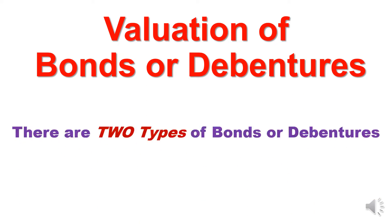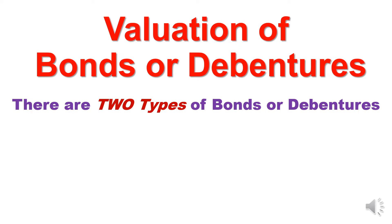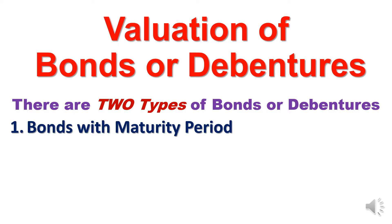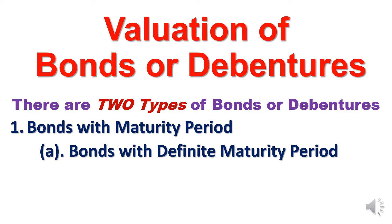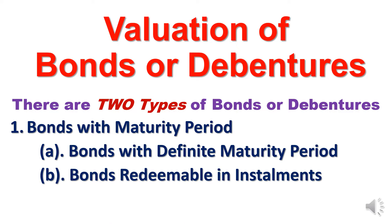Valuation of bonds and debentures. There are two types of bonds and debentures. One is bonds with maturity period — the bonds will be redeemed after a certain time period. Under that, bonds with a definite maturity period means the entire amount will be paid off after completion of certain time periods, say 5 years or 10 years. The second category is bonds redeemable in installments — the bond value will be redeemed in installments every year instead of a lump sum payment at the end.